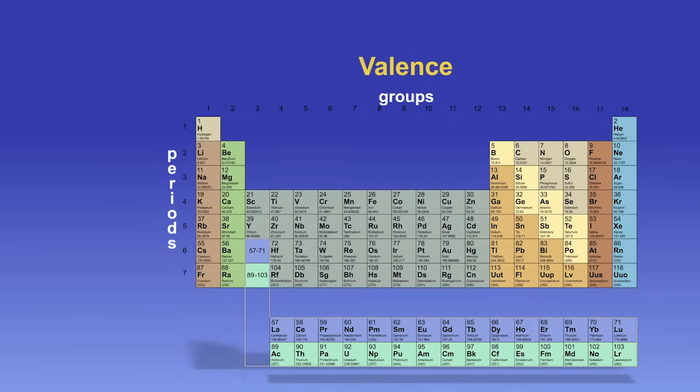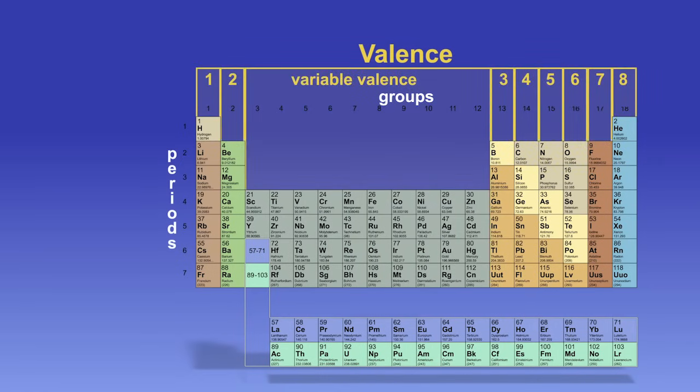Here are the element groups and the number of valence electrons present. Count from the left, but skip over the transition metals, because these are a little more complex.